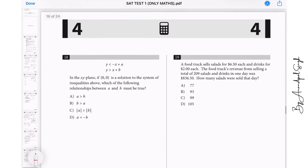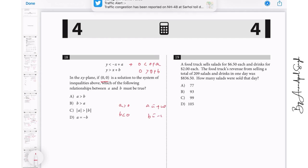Let us go to question number 18. Y is less than minus x plus a, y is greater than x plus b, and origin 0,0 is a solution. It means that it should satisfy both equations. From here we get 0 is less than 0 plus a, it means a is greater than 0, that is a is positive. And from the second equation, 0 is greater than 0 plus b, means b is negative. Now a is positive, b is negative, it means a is greater than b. So I will go with A.